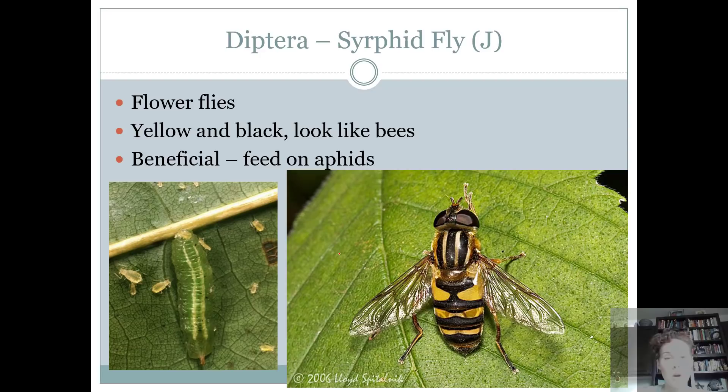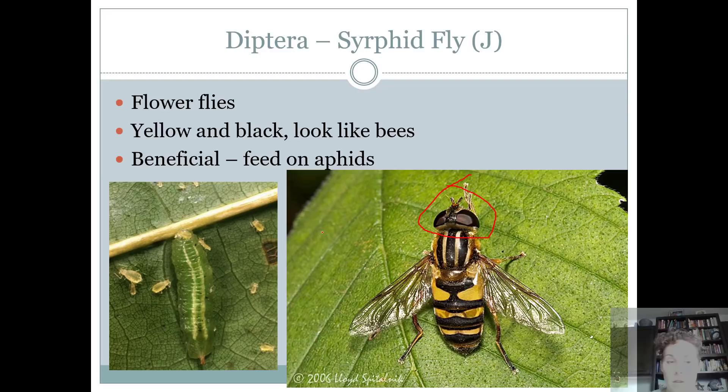Then we have syrphid flies — this is the last one that juniors are going to have to know. They're also called flower flies or hover flies; either one of those three will be accepted on the contest. They mimic bees but they don't have a fuzzy body, and they have those huge eyeballs — so I would look at the head to tell the difference. Extremely beneficial: the adults are pollinators but the larvae eat aphids. Flowers are going to be their host.